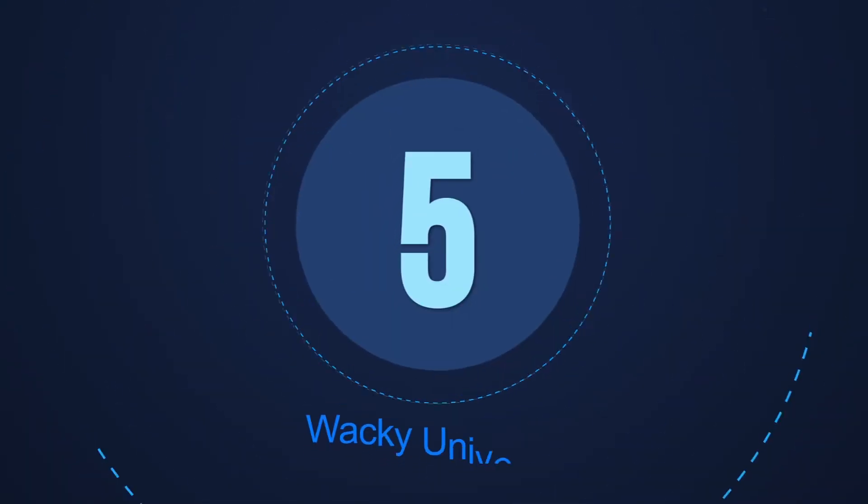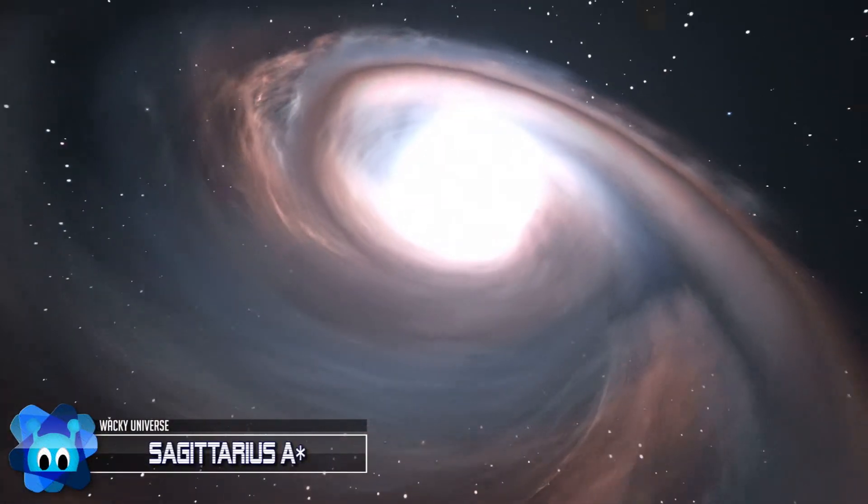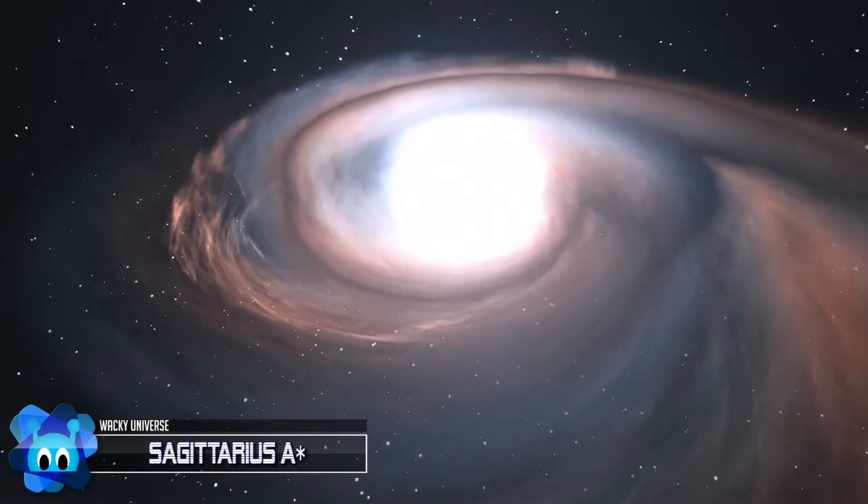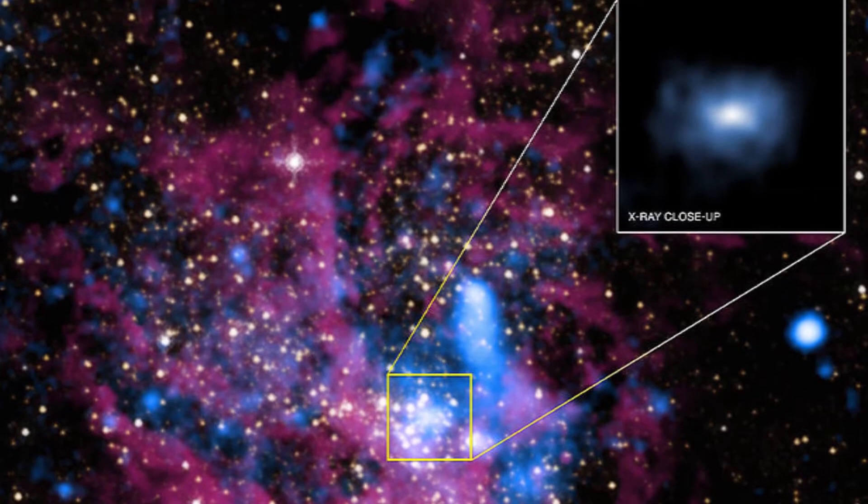Number 5: Sagittarius A Star. Each spiral galaxy is thought to contain a supermassive black hole in its center, perhaps creating that galaxy through its immense gravity. The Milky Way's is Sagittarius A Star, located in the Sagittarius A region of our galaxy.